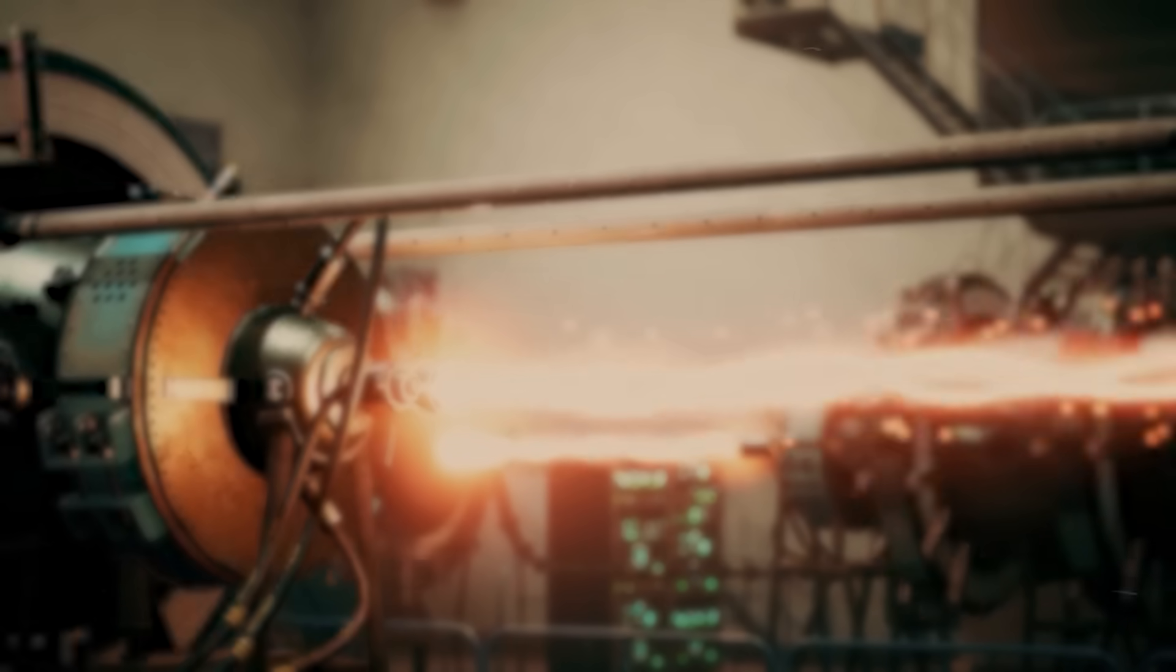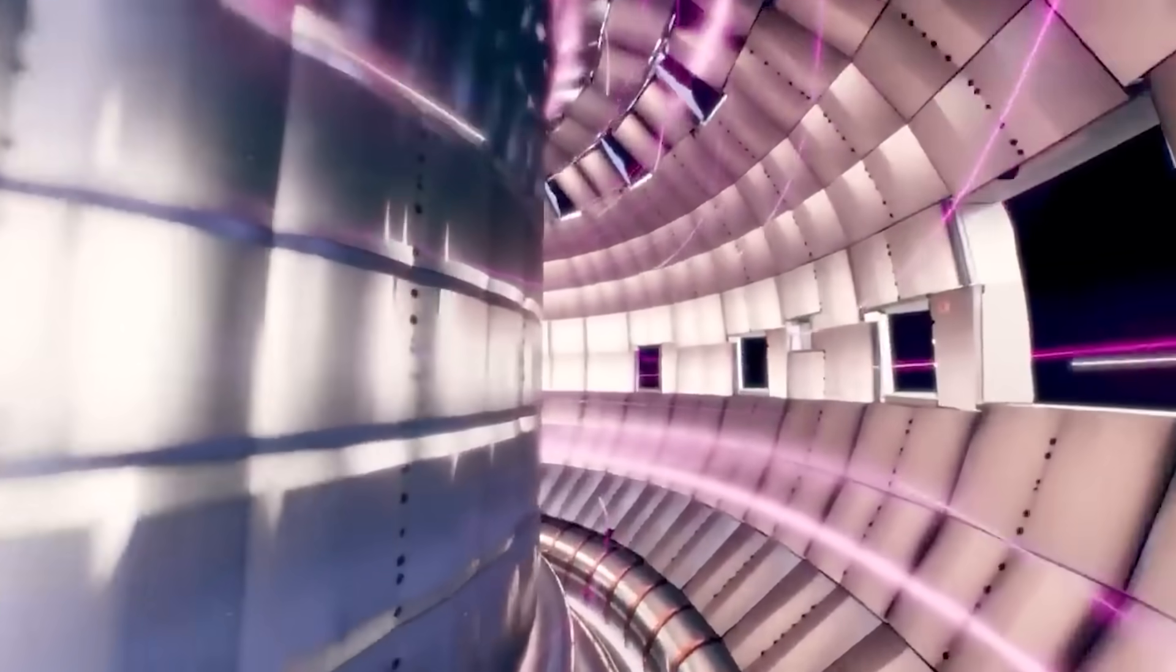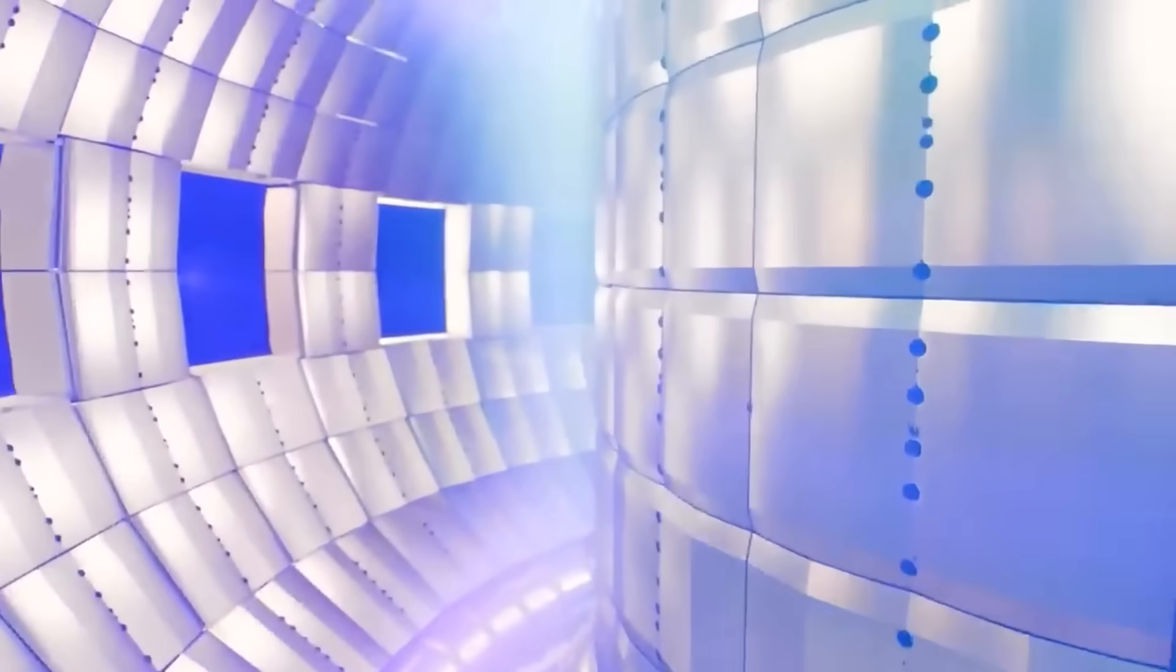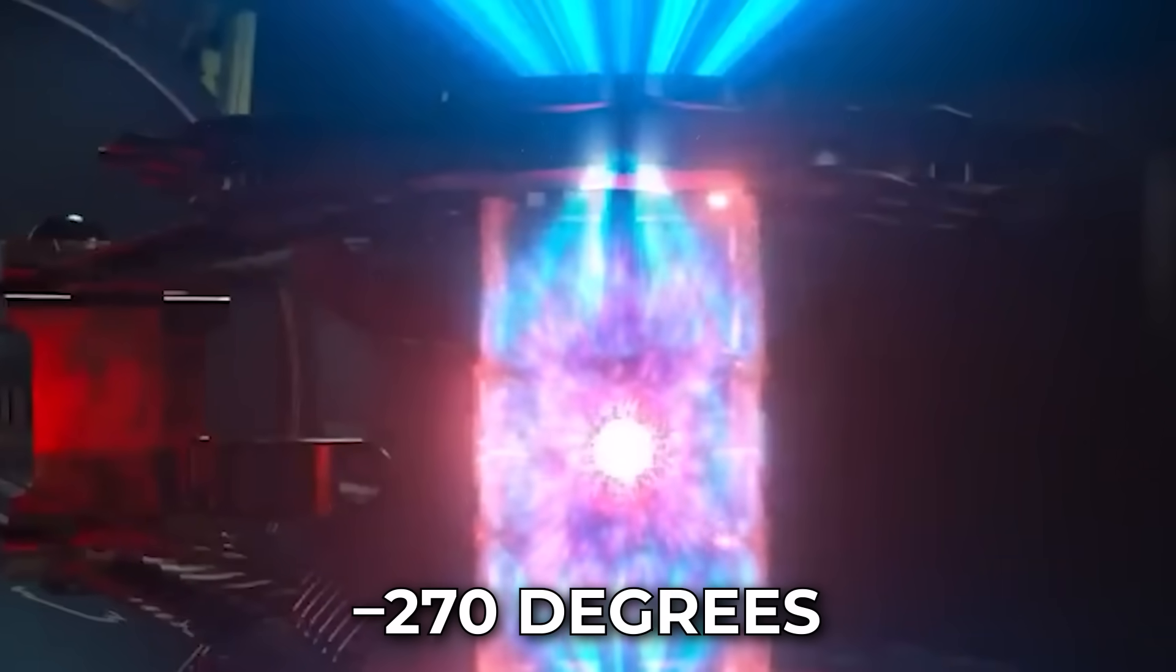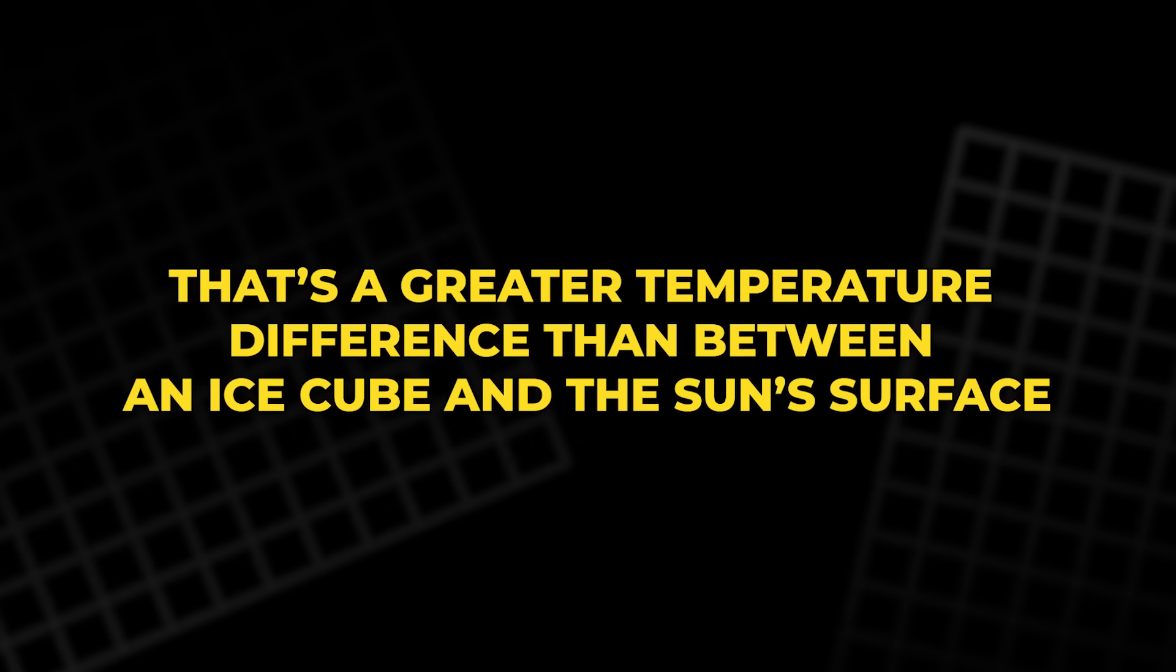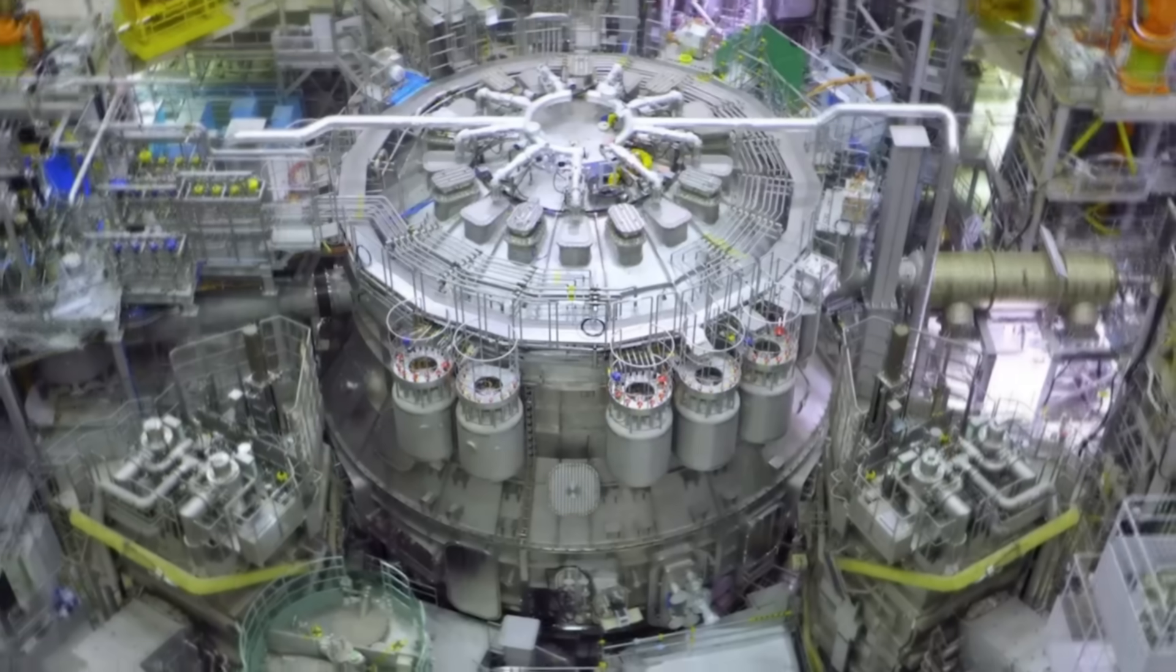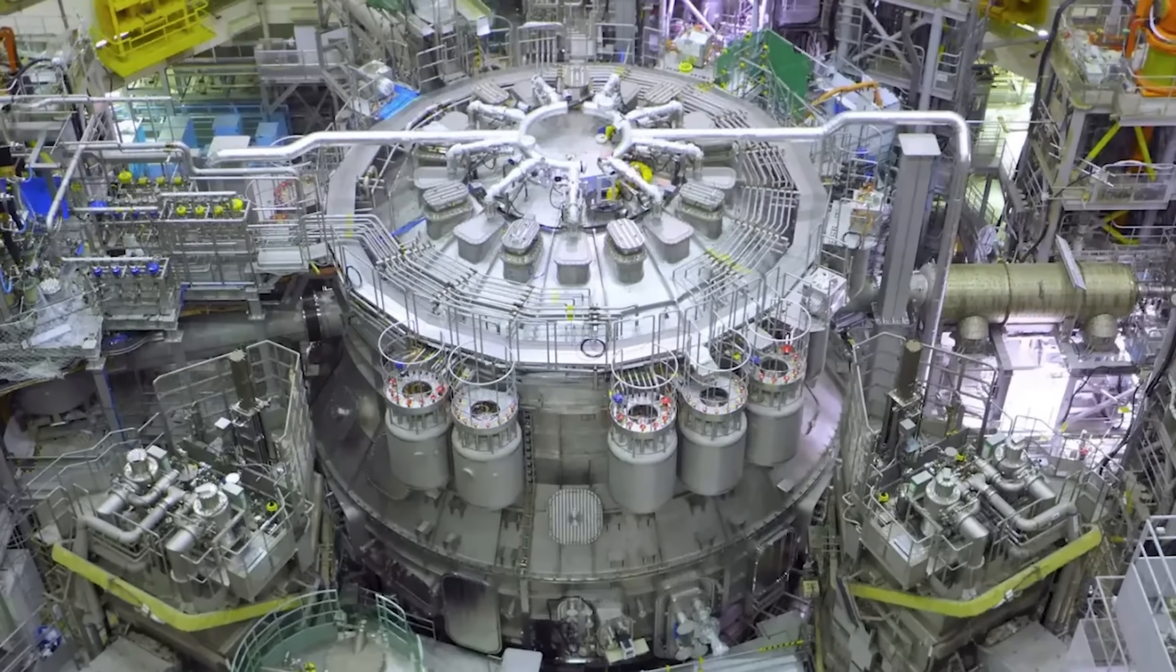Inside the reactor, temperatures soar to 20 million degrees Celsius, hotter than the core of the sun. Yet just a few meters away, the superconducting magnets must stay at minus 270 degrees, colder than deep space. That's a greater temperature difference than between an ice cube and the sun's surface. To handle it, engineers built one of Europe's largest liquid helium cooling systems.